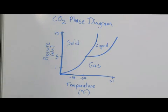So here we have a phase diagram of CO2. On your y-axis you have pressure in atmospheres, and on the x-axis you have temperature in degrees Celsius.